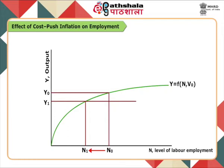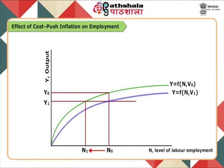Where V1 represents other factor inputs except labour at a fixed level, less than V0. The level of labour employment required to produce Y1 along production function Y = f(N, V1) is N0. Hence, it is seen that although output reduces from Y0 to Y1 due to cost-push inflation, there is no effect on employment, since employers substitute other factor inputs with labour and as a consequence there is no reduction in employment.